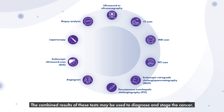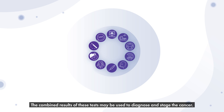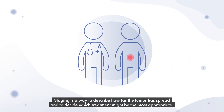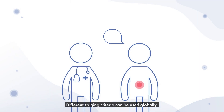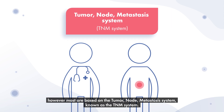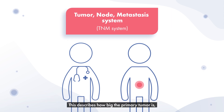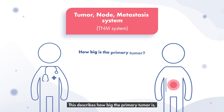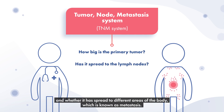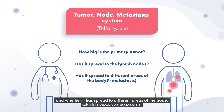The combined results of these tests may be used to diagnose and stage the cancer. Staging is a way to describe how far the tumour has spread and to decide which treatment might be the most appropriate. Different staging criteria can be used globally; however, most are based on the tumour-node-metastasis system, known as the TNM system. This describes how big the primary tumour is, whether it has spread to the lymph nodes, and whether it has spread to different areas of the body, which is known as metastasis.